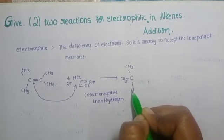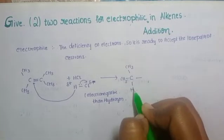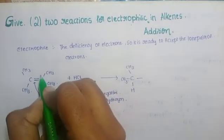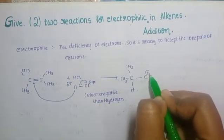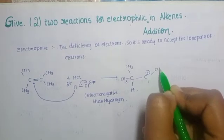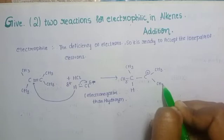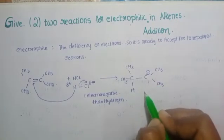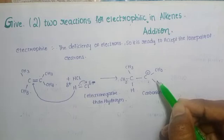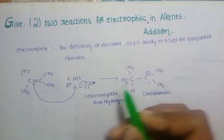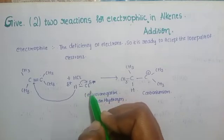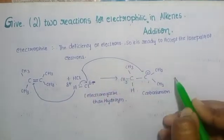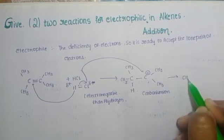When the hydrogen comes here, there is a deficiency of electrons on the adjacent carbon, forming a carbocation intermediate — the carbonium ion. To stabilize this carbocation intermediate, chlorine, which is electron-rich, attaches to this carbocation, making the whole group stable.